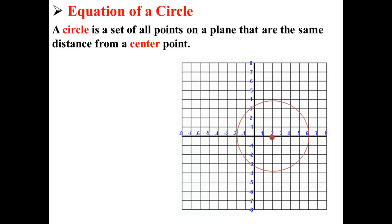Here we have a graph of a circle. This circle has its center at the point (h, k). In this case, our center is at the point (2, 0).